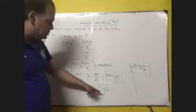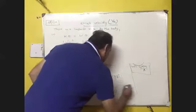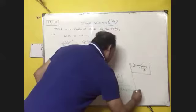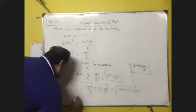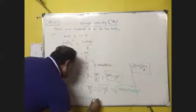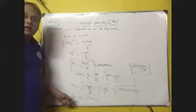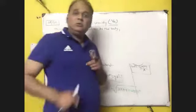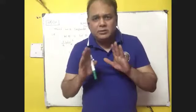It means it is also constant and if we are substituting these values, g is 9.8, R is 6.4 into 10 to the power 6, and after calculating, we are getting 11.2 km per second. It means escape velocity from the surface of Earth is 11.2 km per second and it is constant for every object.